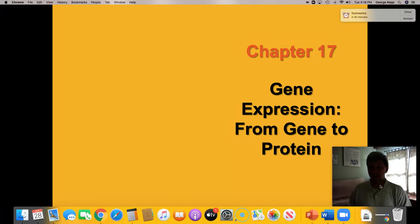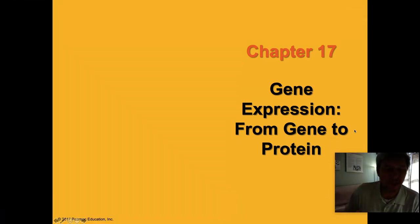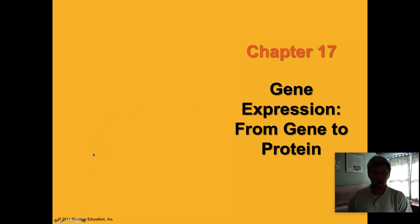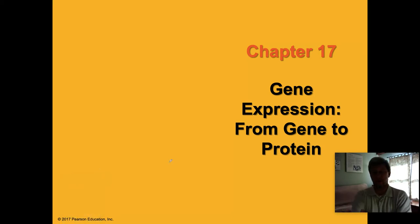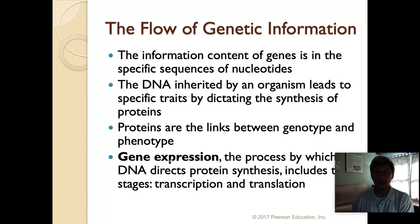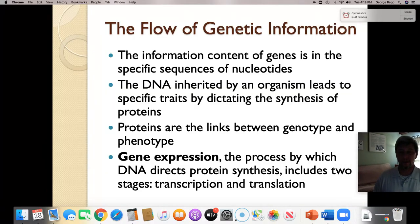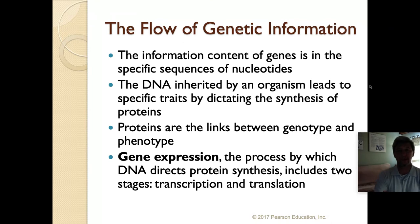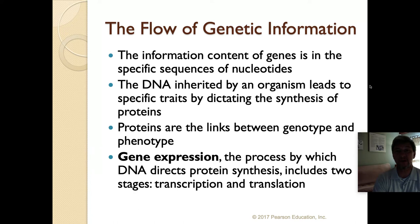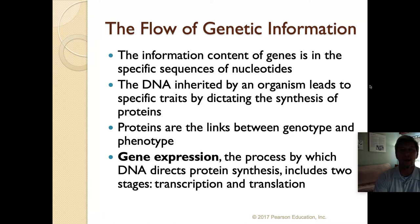Today we are going to start Chapter 17, which is all about how a gene inside a chromosome is eventually transcribed and translated into a protein. The code for a protein is found in the genes — in the very specific sequence of nucleotides: adenine, thymine, cytosine — and the order in which those nucleotides appear in a given gene.